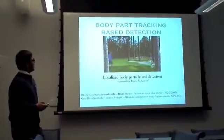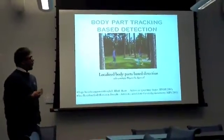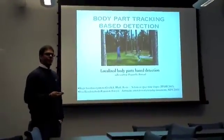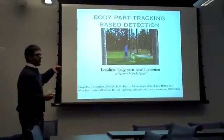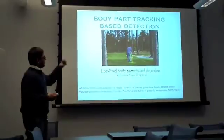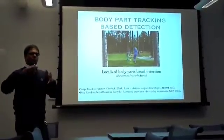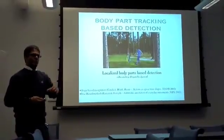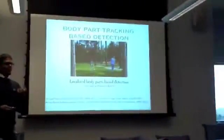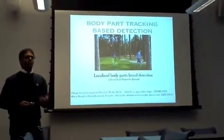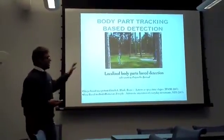Another general class of recognition method is called body part tracking based detection. What happens here is, instead of directly looking at the trajectory of points in the video, we first try to localize different parts of the body and learn a model on the trajectories of those body parts. This method works relatively well, but it's based on the fundamental fact that you should be able to localize human body parts — and if for some reason you are unable to do that, then this method will fail.